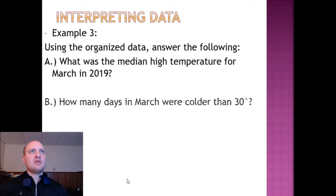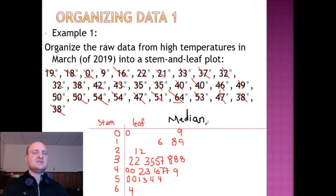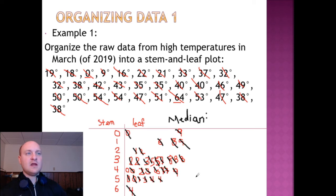Let's start with what was the median high temperature for March in 2019. Since the median is the middle value of the raw data, we are going to have to look at the raw data. Now we've arranged it from low to high here, and we can check pretty quickly for the median. And it turns out that our median value is 40.